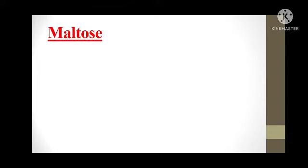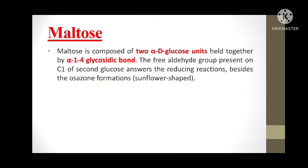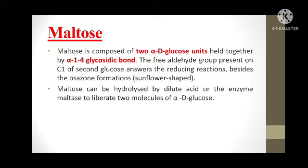The first suitable example for disaccharide is maltose. Maltose is a reducing sugar, meaning it has a free aldehyde or ketone group. Maltose is composed of 2 alpha-D glucose units held together by an alpha-1,4 glycosidic bond. It forms osazones in the shape of a sunflower. Maltose can be hydrolyzed by either dilute acid or the enzyme maltase, which liberates 2 molecules of alpha-D glucose.